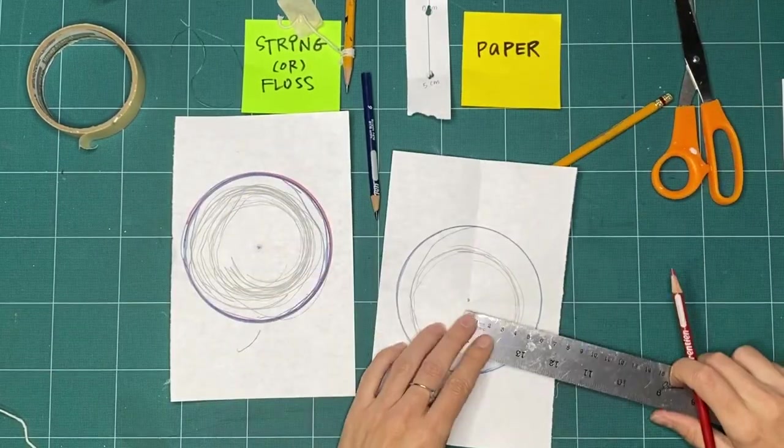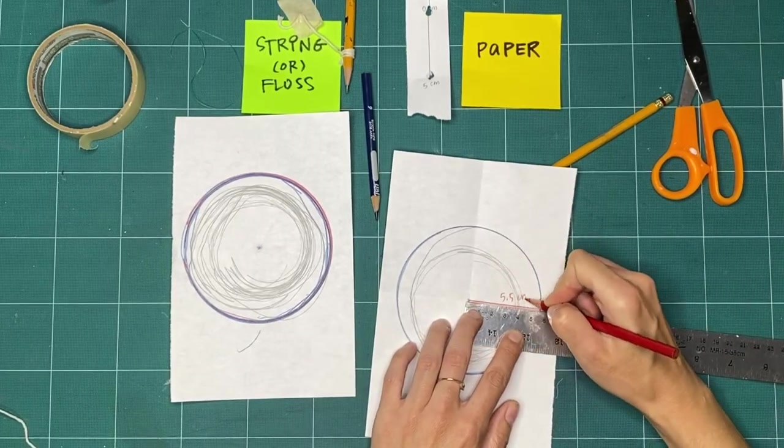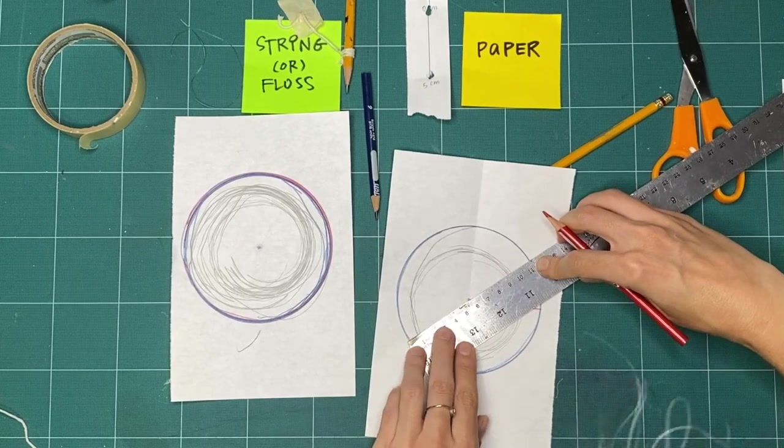Did your circle turn out? Or is it a little shaky in places? Use your ruler. Did it work? Did you make a perfect circle?